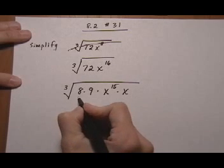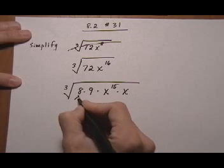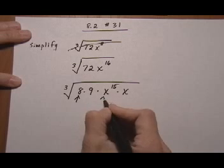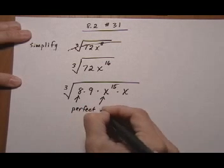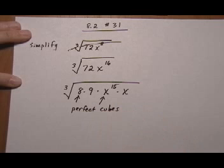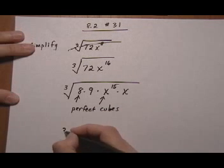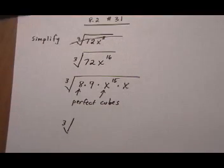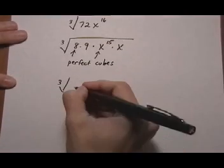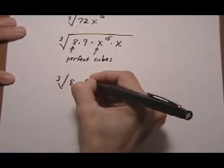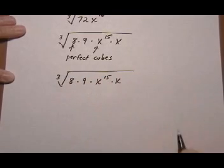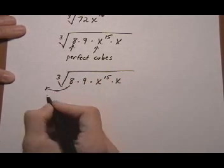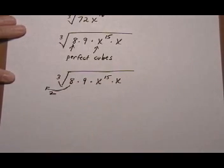And now I'm going to identify who are my perfect cubes. 8 is a perfect cube, and x to the 15 is a perfect cube. So let's pull out the perfect cubes. So I'm going to just rewrite what we have so we can pull things out.